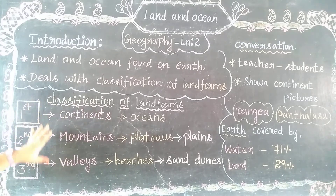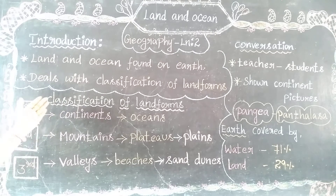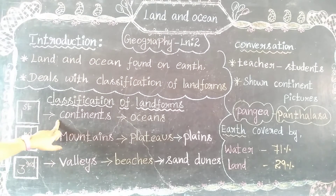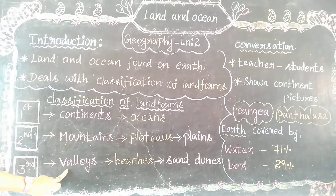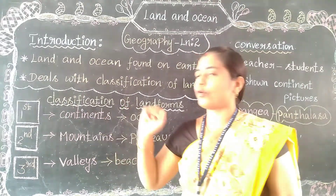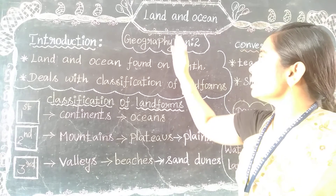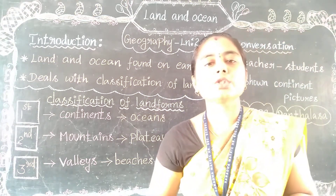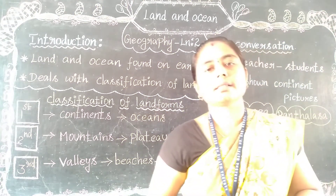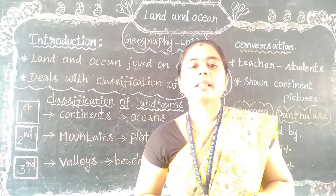So these are all the three classifications of landforms in land and ocean: continents, mountains, and valleys. In this video session, we have learned about the classifications of landforms. In future coming videos, we will learn the others. Thank you, students, for being a part of the session.